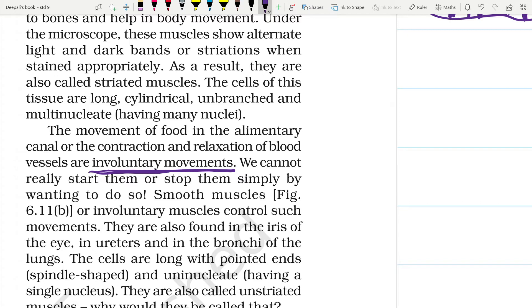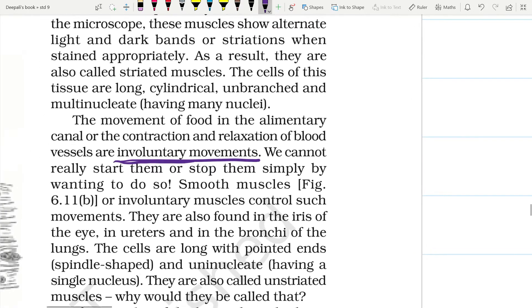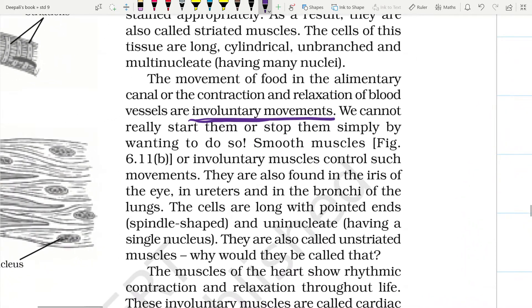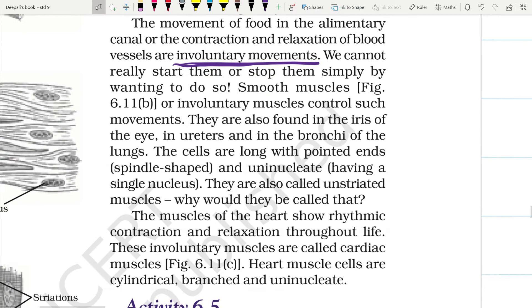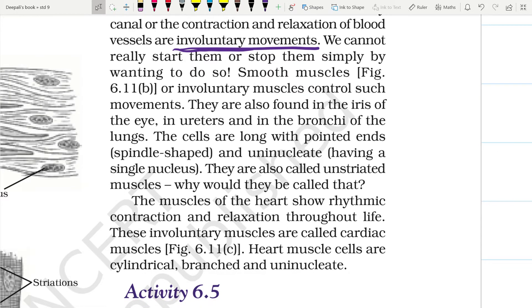So such muscles are called involuntary muscles. We cannot really start them or stop them simply by wanting to do so. Smooth muscles or involuntary muscles control such movements and they are found in the iris of the eyes, in the uterus, and in the bronchi of the lungs. The cells are long with pointed ends, spindle-shaped, and uninucleated, having a single nucleus.